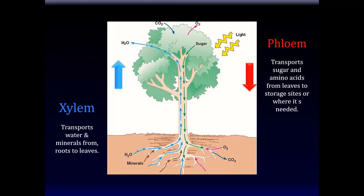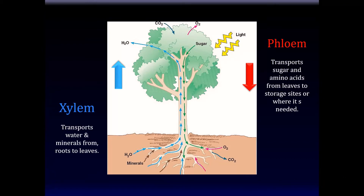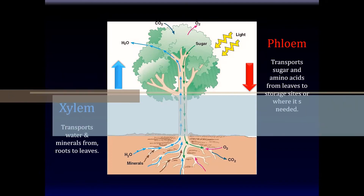I remember xylem as taking water and minerals from the ground toward the sky, because xylem has a kind of 'sky' sound to it. Phloem is the transport system that takes sugars from the leaves to different parts where they're needed. Together, xylem and phloem constitute the vascular system of the plant.